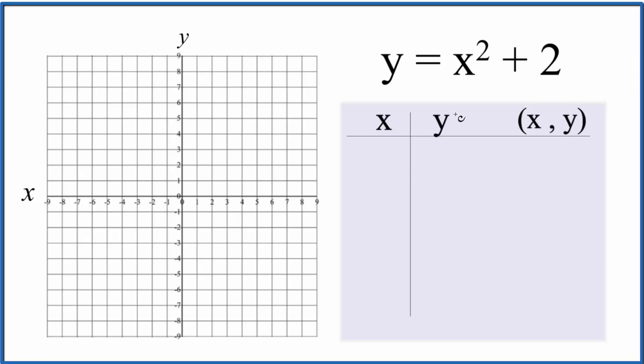The values we choose for x, we're just going to choose values that we think will show up on our graph paper here. We can use any values, just more convenient if they show up on the graph paper we have here. Let's choose 2, 1, 0, negative 1, and negative 2.